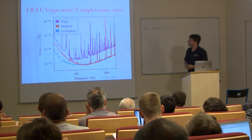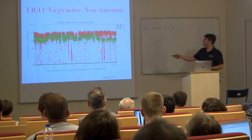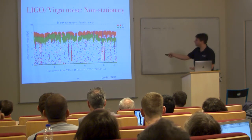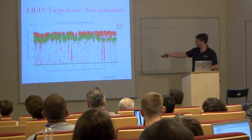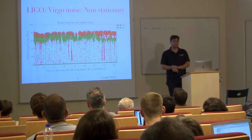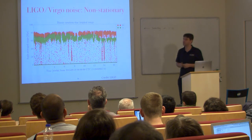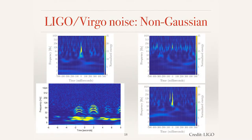Additionally, the sensitivity of the detectors is not constant. Looking at the angle-averaged range for observing binary neutron stars during the first observing run of the advanced detectors, you can clearly see it varies enormously — there are broad changes and also dramatic local dips. We have to deal with the fact that sensitivity is changing with time, meaning the noise curves are both complex and time-varying.